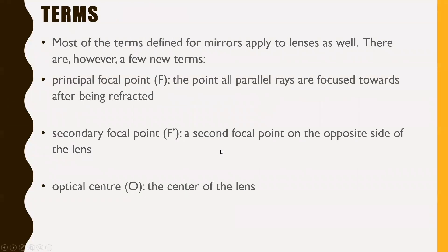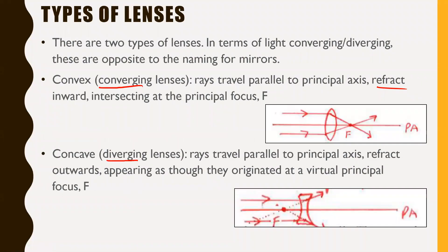Most of the terms defined for mirrors apply to lenses as well, though there are a few new terms. The principal focal point is the point all parallel rays are focused towards after being refracted. Looking at the concave lens image, the light isn't actually being focused towards it, but the virtual light rays — the dotted lines — would be. So for concave lenses, the focal point still is where the light rays are converging or diverging from.